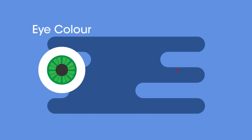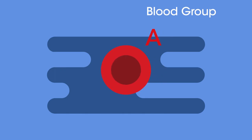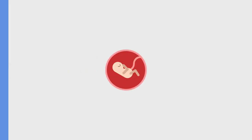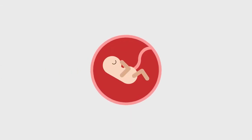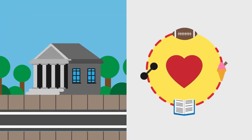Some examples of variation in humans that are controlled by genes include eye color and blood group. If you have blood group A, it's because you have the alleles for this characteristic. This is genetic variation — it is something that you were born with and nothing can change it.